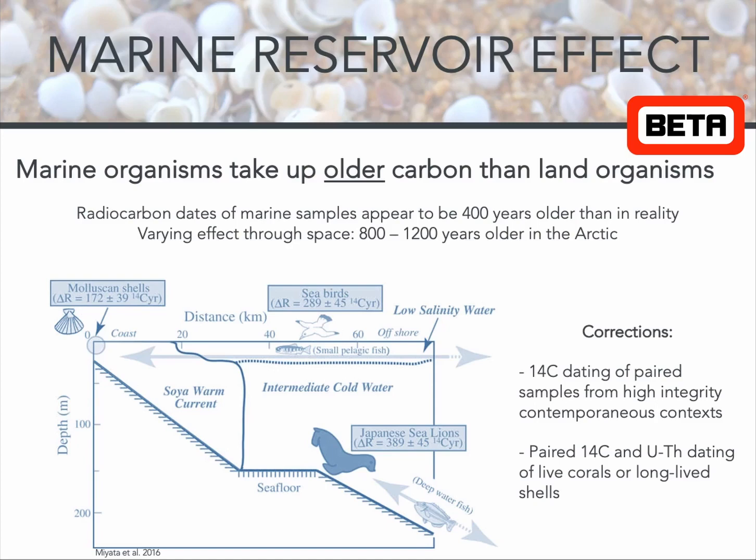Oceans are large carbon-14 reservoirs. Surfaces of oceans have two sources of radiocarbon: carbon dioxide from the atmosphere as well as from the deep ocean. The deep ocean radiocarbon is inherently much older than atmospheric radiocarbon, and thus it creates an offset between radiocarbon signatures of marine organisms compared to land organisms.